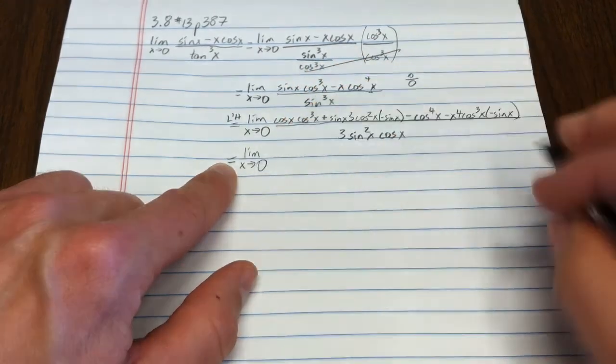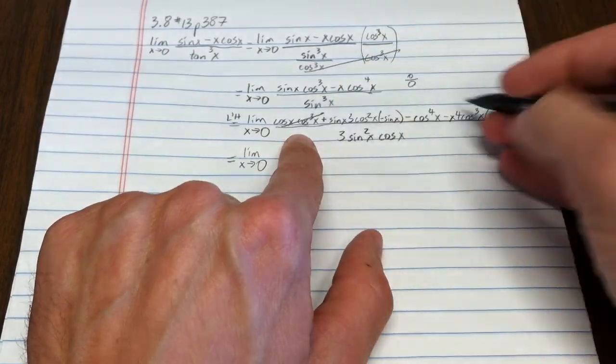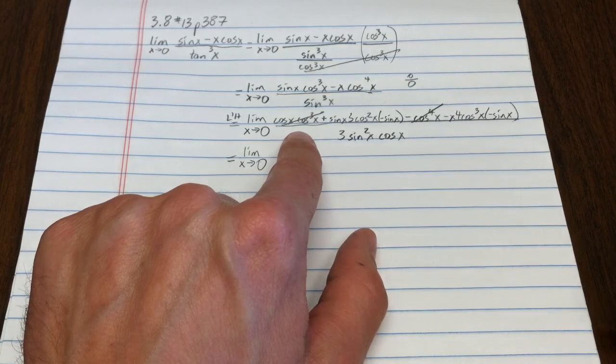So, first thing that you might notice is, hey, I have a cosine to the fourth x, I have a negative cosine to the fourth x. Those two cancel. Next, you might notice, hey, all three of these terms have a sine in them.